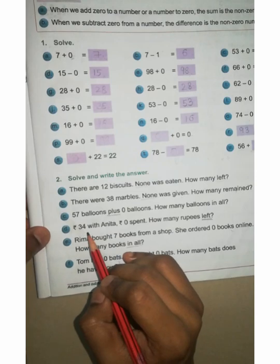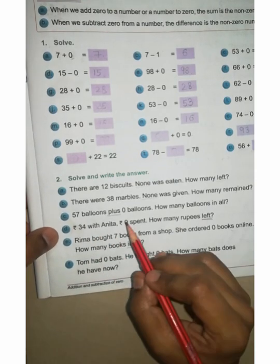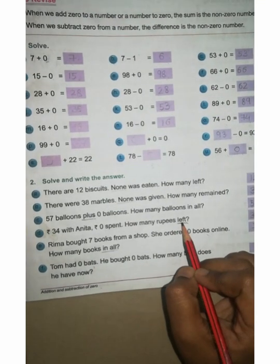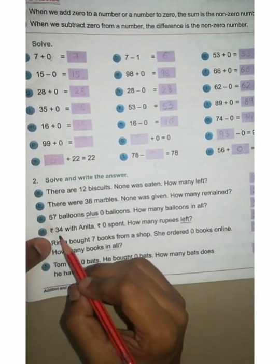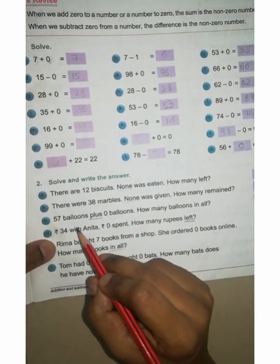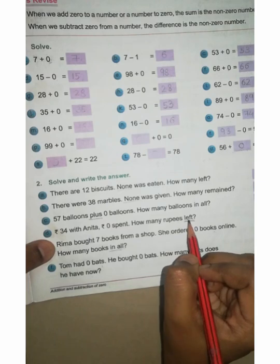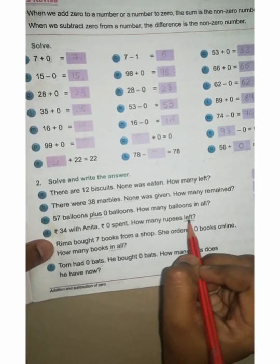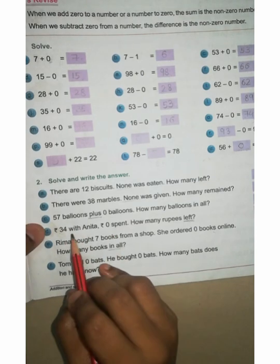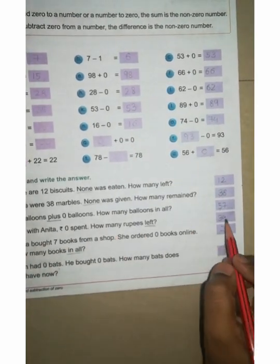Now D: Rupees 34 with Anita, rupees 0 spent, how many rupees left? Now you can see your 34 rupees with Anita. Okay. And she spent 0. It means minus given, left, left here. This is this question minus. Okay. 34 minus 0, as it is you can write 34.